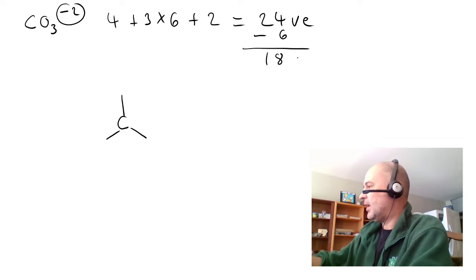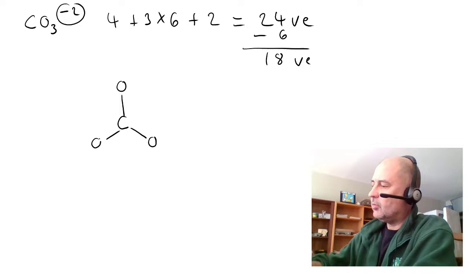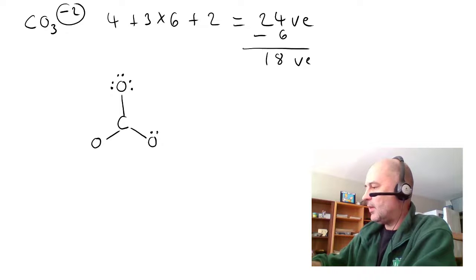That means we have a remaining 18 electrons to spare. We attach oxygen atoms to each end, or we make a single bond to each of them. And then, we spread out those electrons.